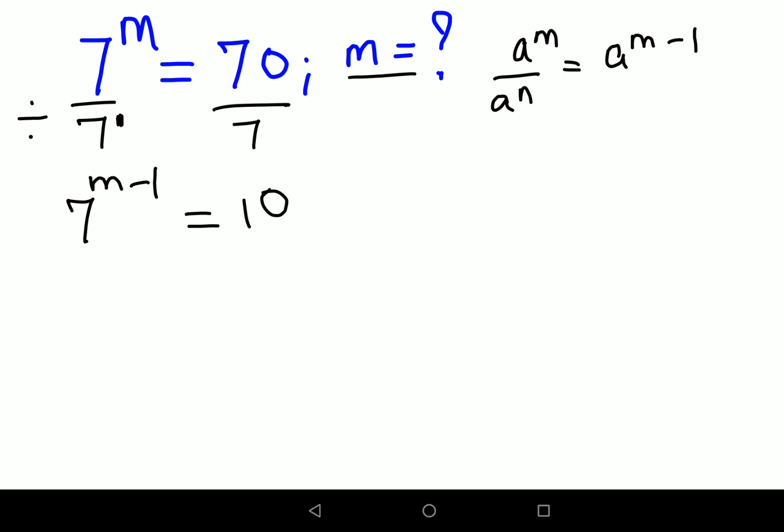Okay. Now in order to find the value of m, I will take log on both sides. Log of 7 raised to m minus 1 equals log of 10.